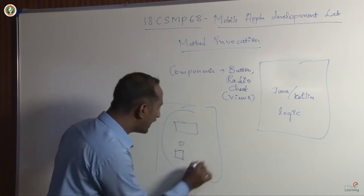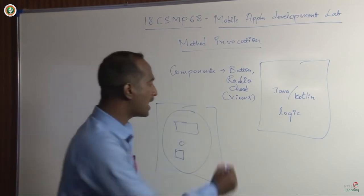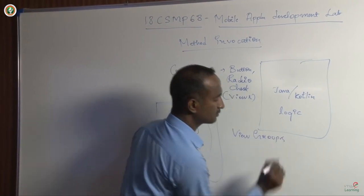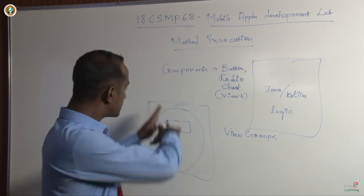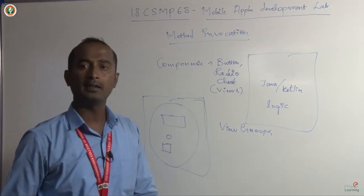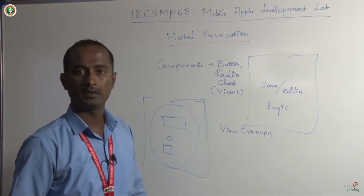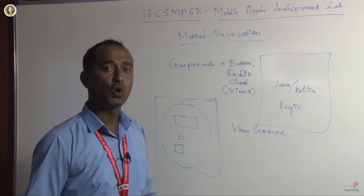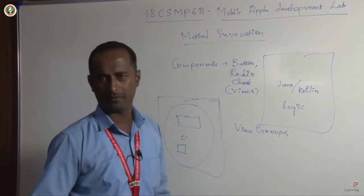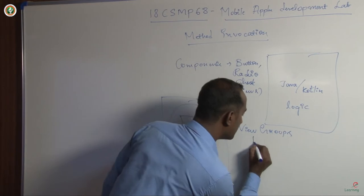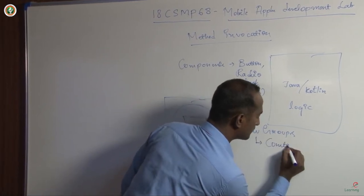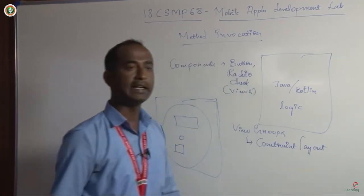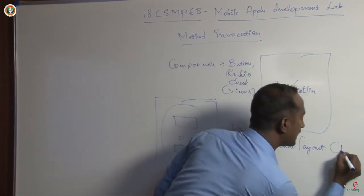How these components are grouped in your design is what we call view groups. Basically, we have five view groups in Android. Out of those five, we are going to use three dominantly. The first one is constraint layout, which is the default one. Whenever you create a project in Android Studio, it will initially be in constraint layout.